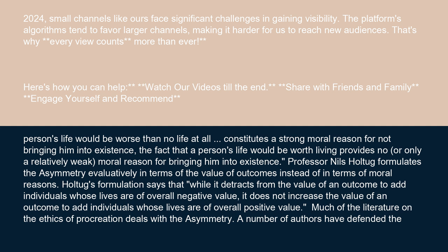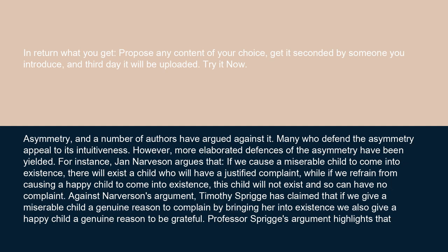Much of the literature on the ethics of procreation deals with the asymmetry. A number of authors have defended it, and a number have argued against it. Many who defend the asymmetry appeal to its intuitiveness. For instance, Jan Narvison argues that if we cause a miserable child to come into existence, there will exist a child who will have a justified complaint, while if we refrain from causing a happy child to come into existence, this child will not exist and so can have no complaint.